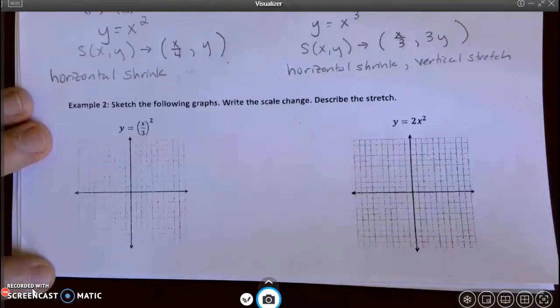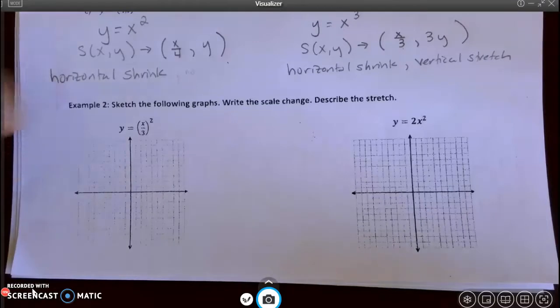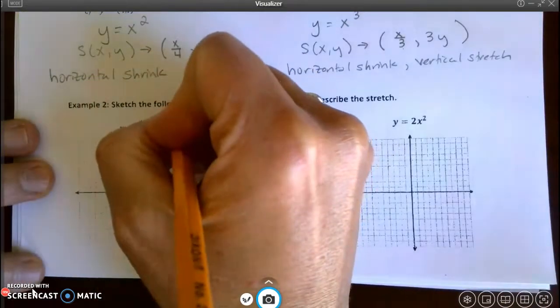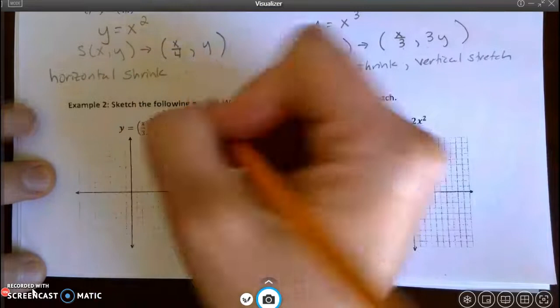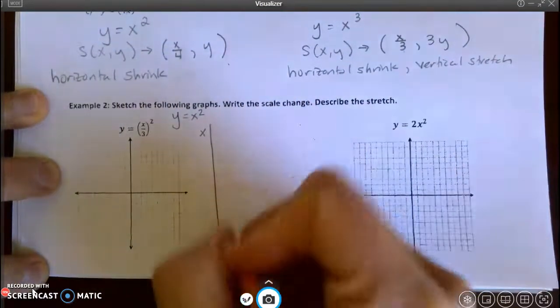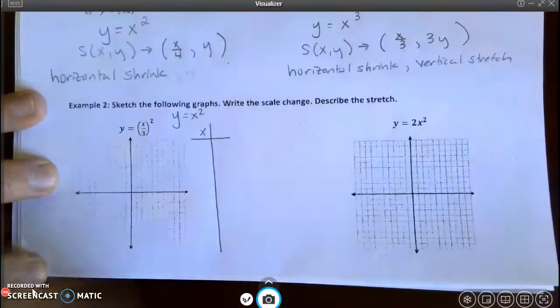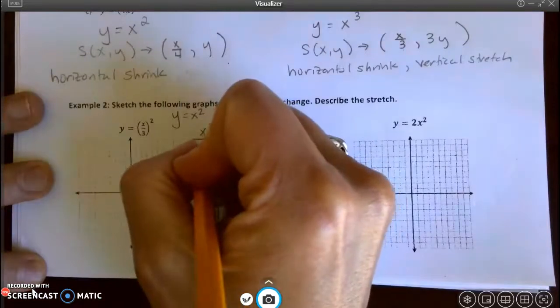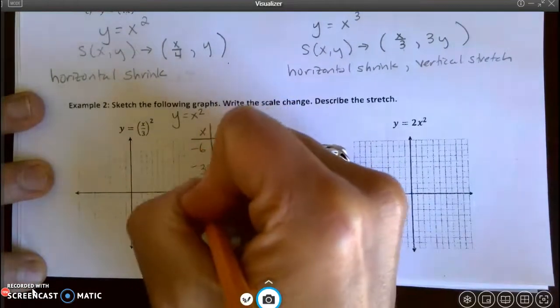So what I want to do in order to do this is, we're not going to do this every time we graph, but I just want to do this to show you the actual effect of a scale change. So I'm going to start off with the parent function, y equals x squared, and I'm going to make up a table.